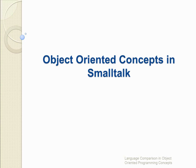Smalltalk is the first object-oriented language. Smalltalk is also a pure object-oriented programming language, meaning that unlike Java and C++, there is no difference between values which are objects and values which are primitive types.